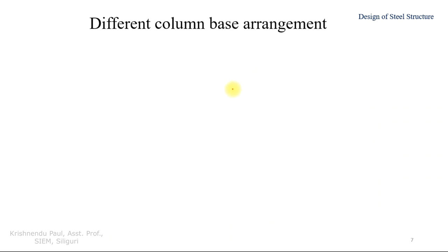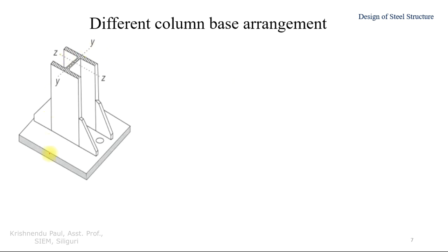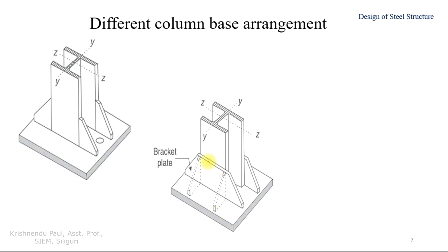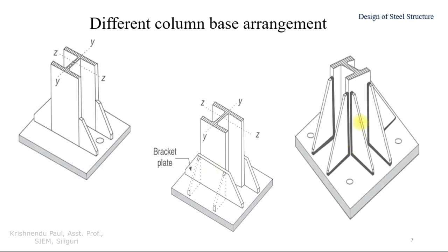There are different types of column base arrangements shown in three figures. In the first figure, the column has extra plates and a base plate. In the second figure, a gusset plate is added, supported by a bracket plate between the base plate and the gusset. In the third figure, a symmetric arrangement is shown. We need to understand the importance of these extra elements provided in different situations.